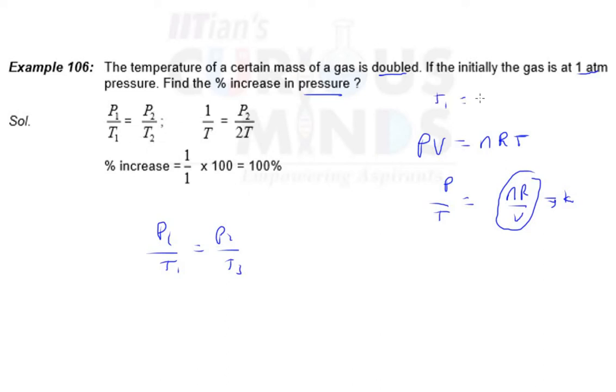Let T1 be T. So what is T2? 2T, because temperature has doubled. What is P1? 1 atm. So P2 is going to be solved for. You can see 1 upon T equals P2 upon 2T. This gets cancelled out. So P2 is nothing but 2 atm.